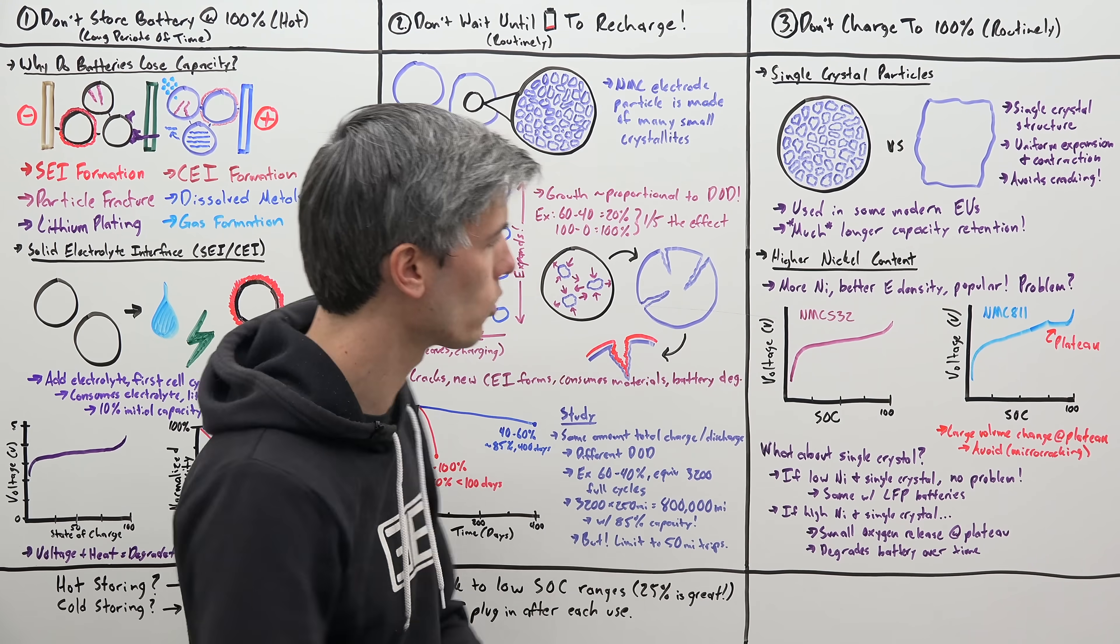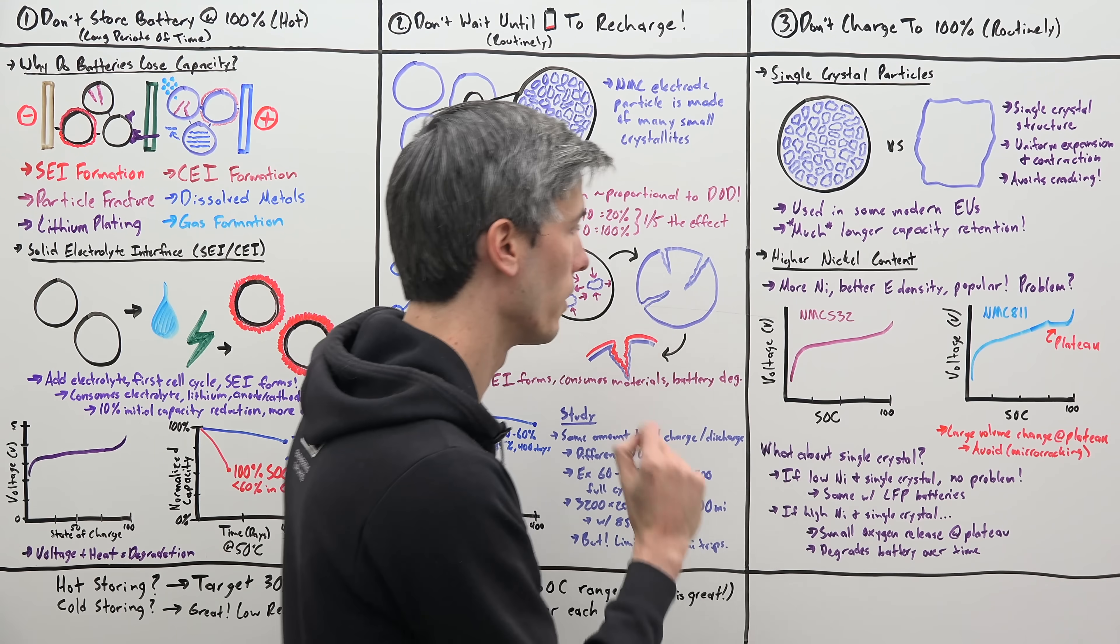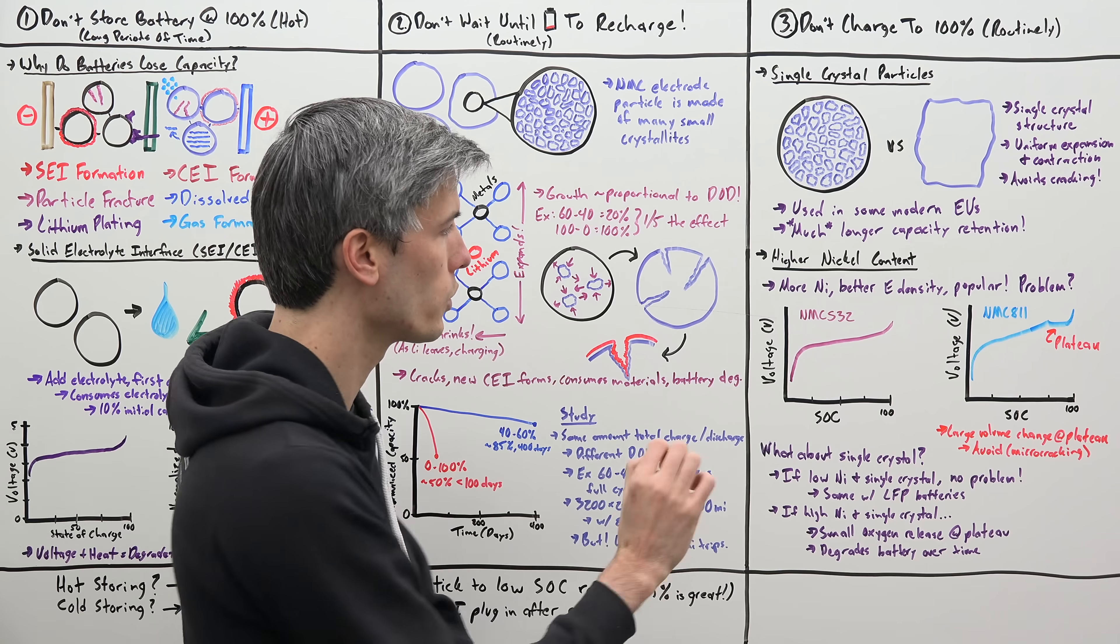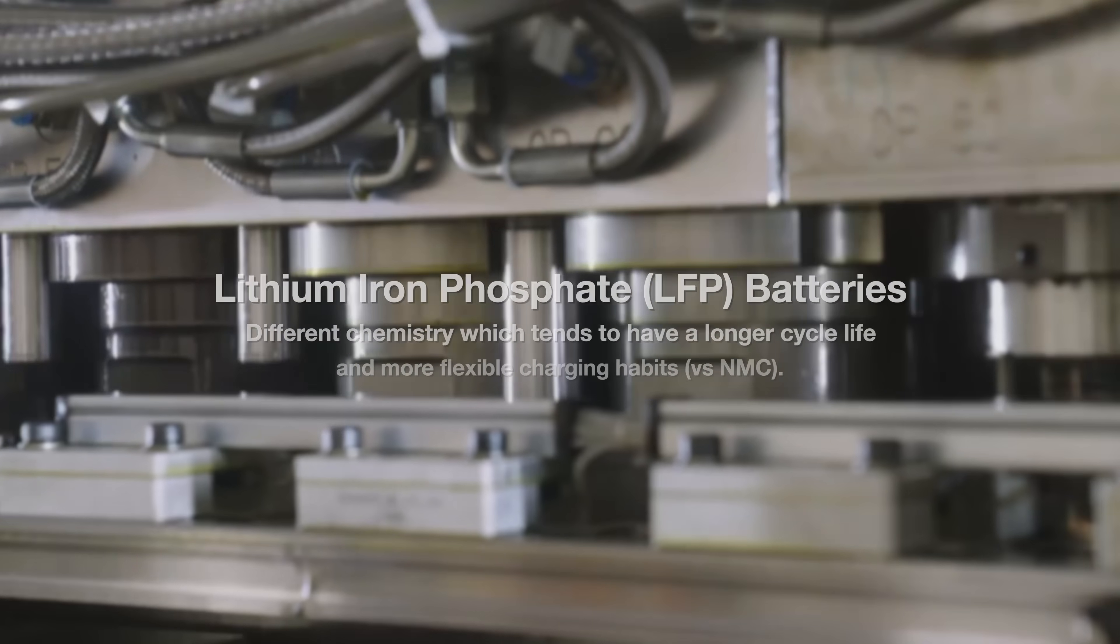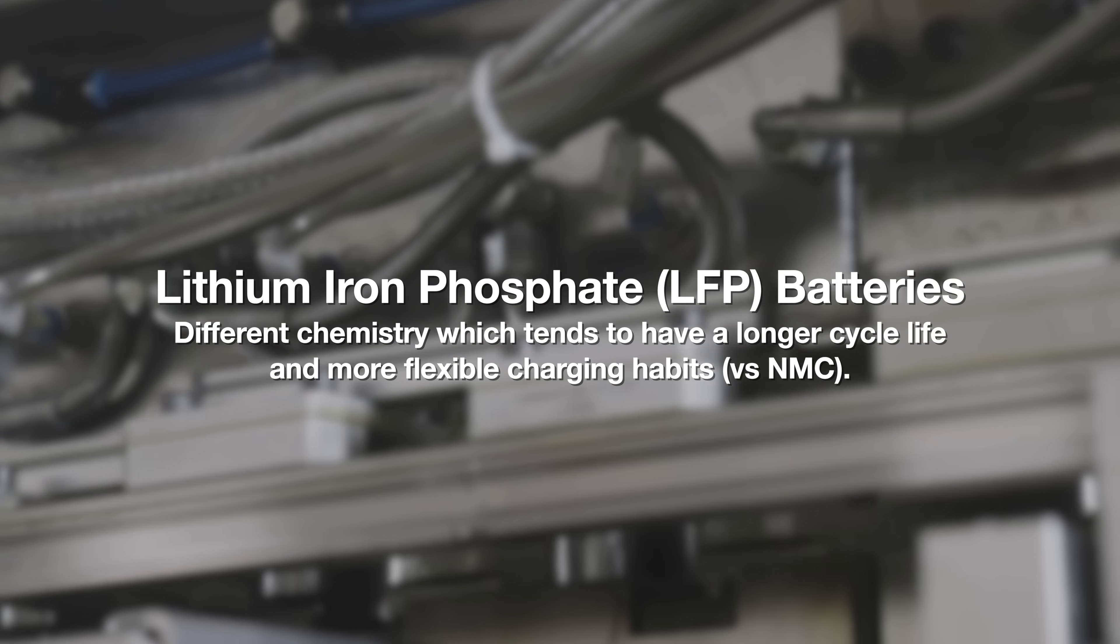Well what if you use a single crystal structure? And also, what if you use a lower nickel content? Well you don't have that plateau, you don't have to worry about that as much. No problem, you can charge up to 100%. The same is basically true for lithium iron phosphate batteries, which use a different chemistry.